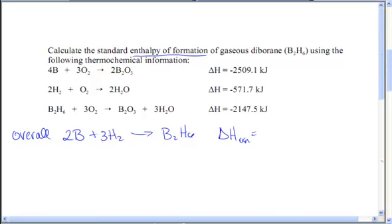So again, make sure everything's on the correct side. My boron is on the left. My hydrogens are on the left. My B2H6 is on the, oh, no, that's not right. So let's flip this. B2O3 plus water yields B2H6 plus 3O2 multiplied by negative 1. Because remember, whatever I do to the reaction, I have to do my delta H. Now I'll get everything to be the correct number.